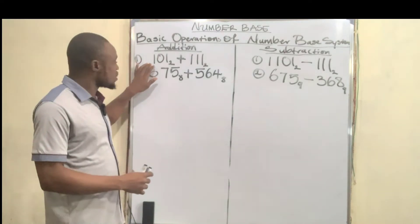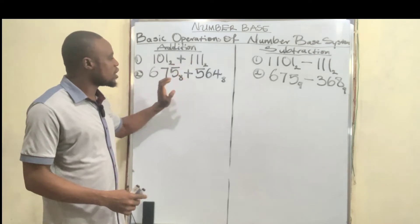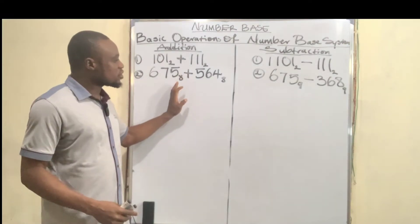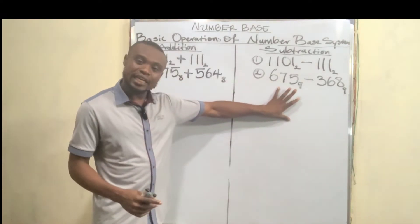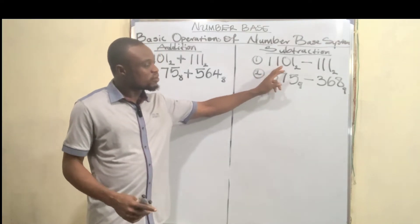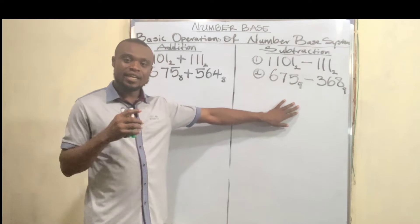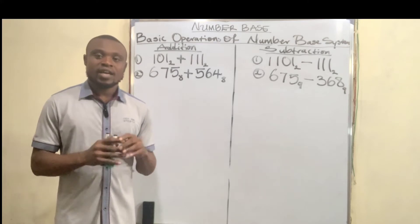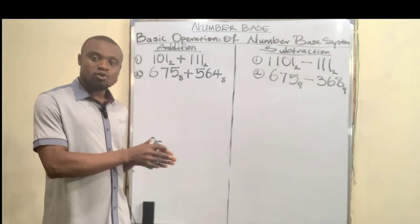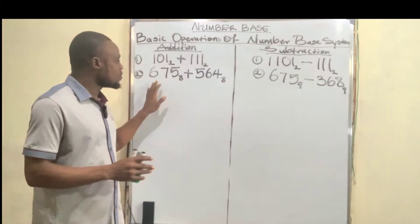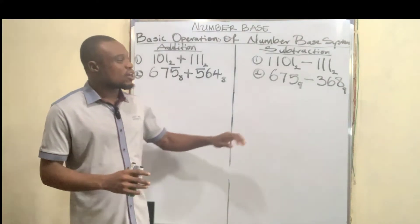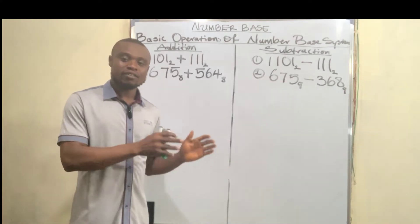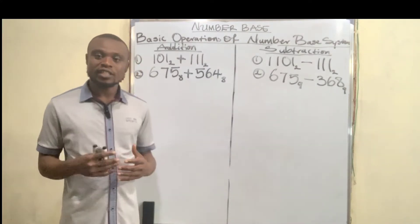The first question is on base two: 101 base two plus 111 base two. The second question involves base eight with an addition operation, and then base nine with a subtraction operation. Numbers in base two are zeros and ones. Numbers in base eight are from zero to seven, so the highest number in base eight is seven. The highest number in base nine is eight, so numbers in base nine go from zero to eight.